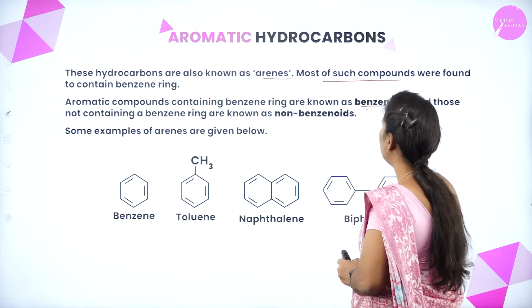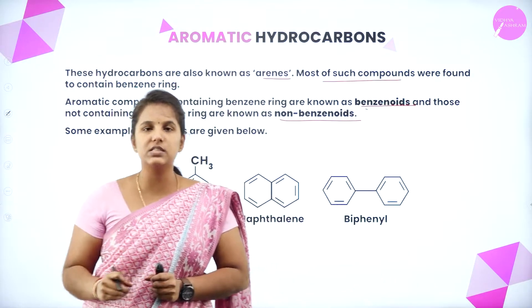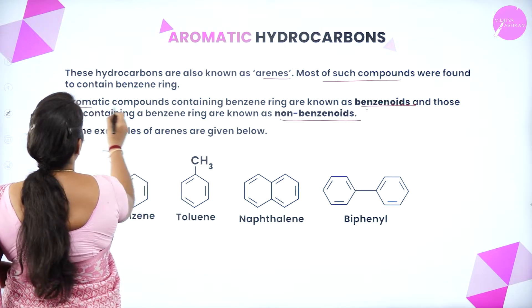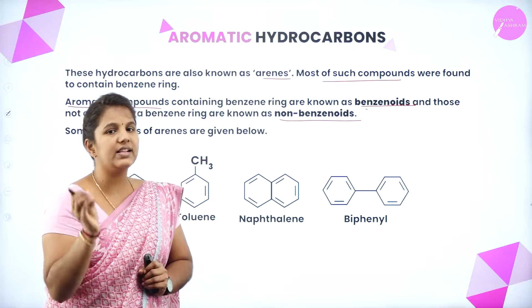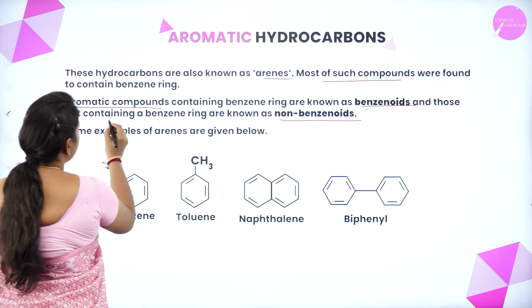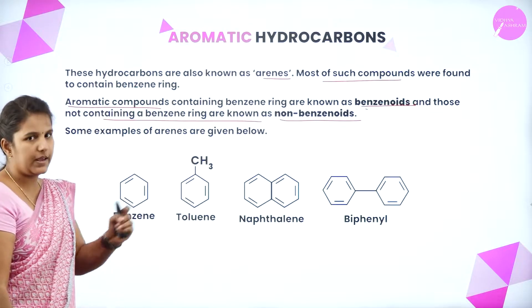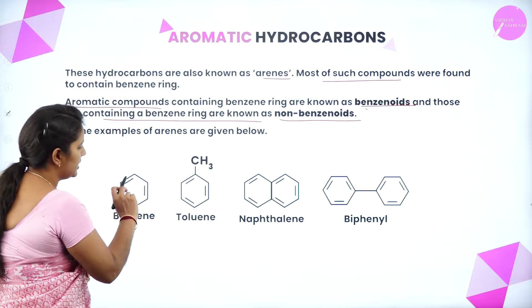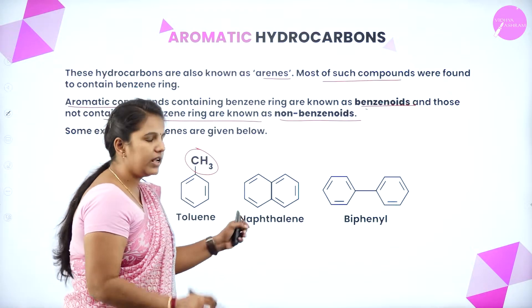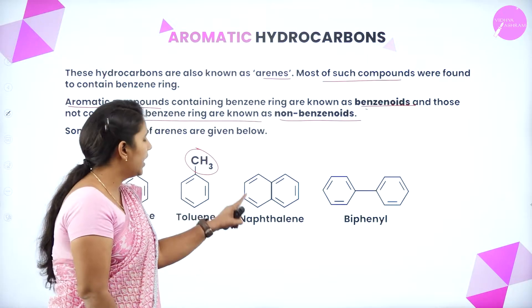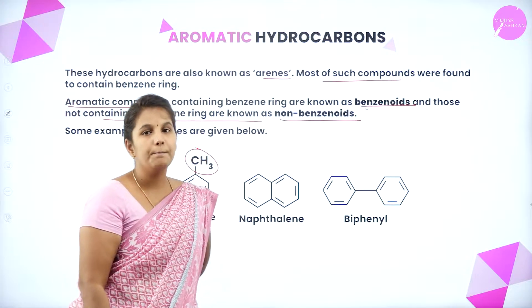Most of these compounds contain a benzene ring. There are two types: benzenoid and non-benzenoid. Benzenoid compounds consist of a benzene ring, while non-benzenoid organic compounds do not contain a benzene ring. Examples of benzenoid compounds include toluene — a benzene ring with one alkyl group — naphthalene, formed when two benzene rings are fused together, and biphenyl, where two rings are connected by a bond.